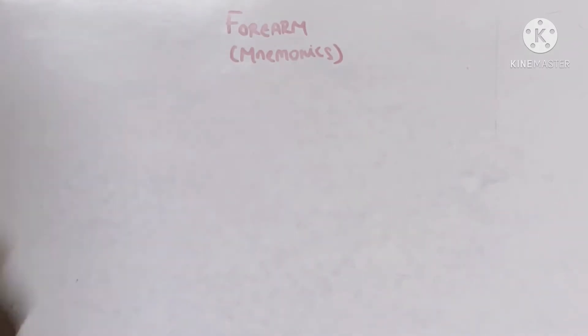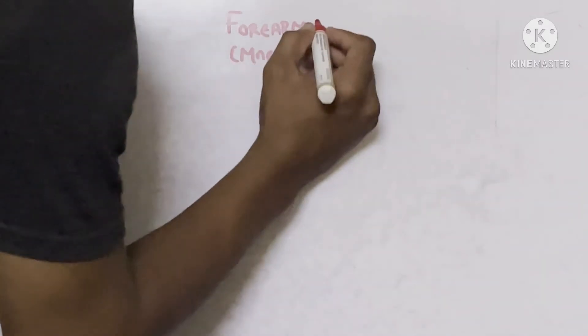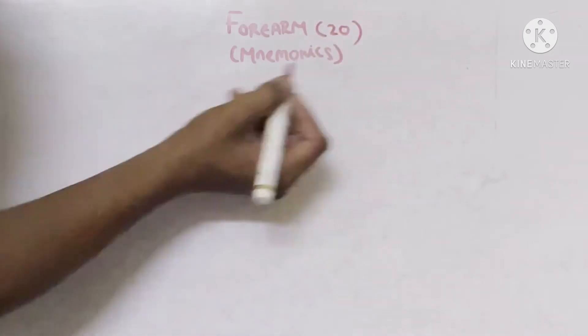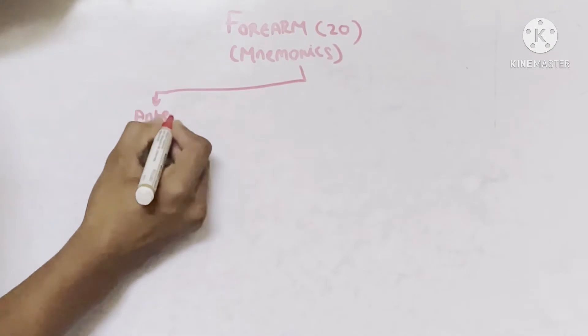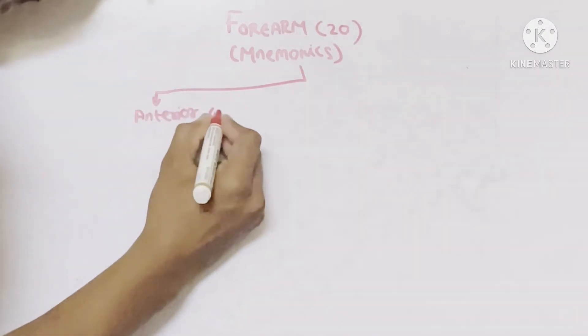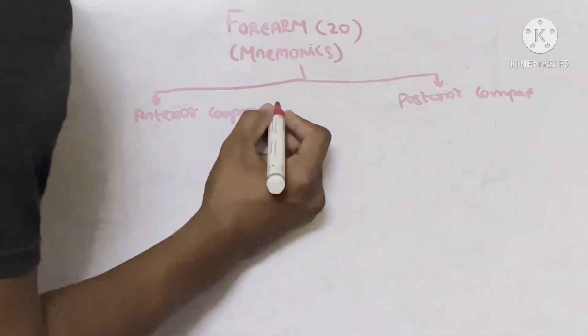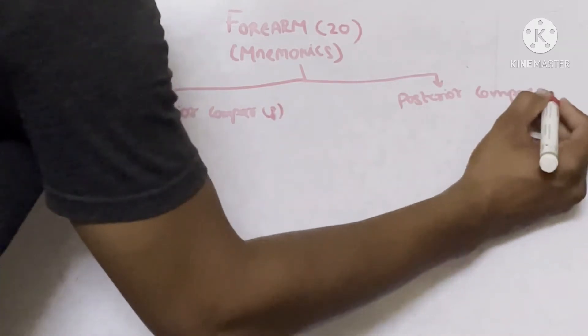If you take forearm muscle, there are almost 20 muscles engaged in this. Forearm muscles can be subdivided into anterior compartment and posterior compartment. Under anterior compartment we have 8 muscles, and under posterior compartment we have 12 muscles.